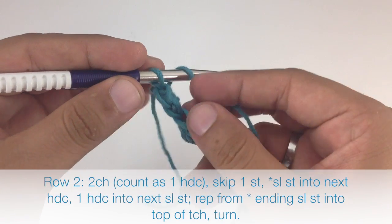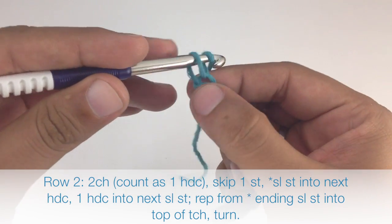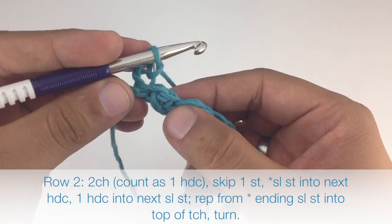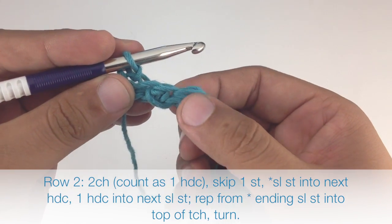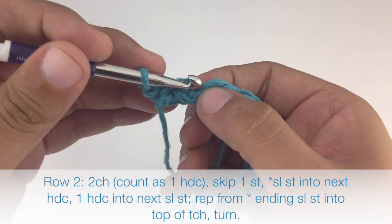Row 2: After turning your work, chain 2. This is going to count as a half double crochet. Then go into the next half double crochet and do a slip stitch.